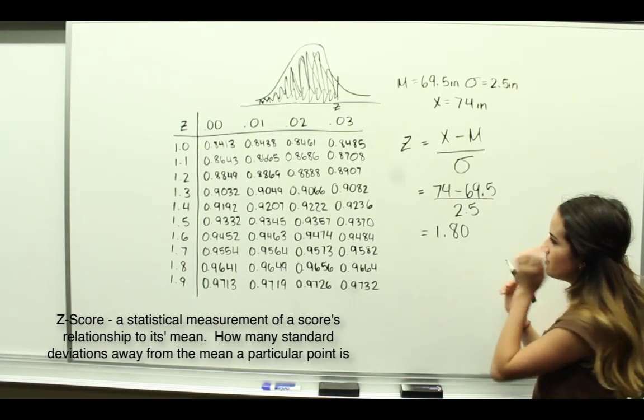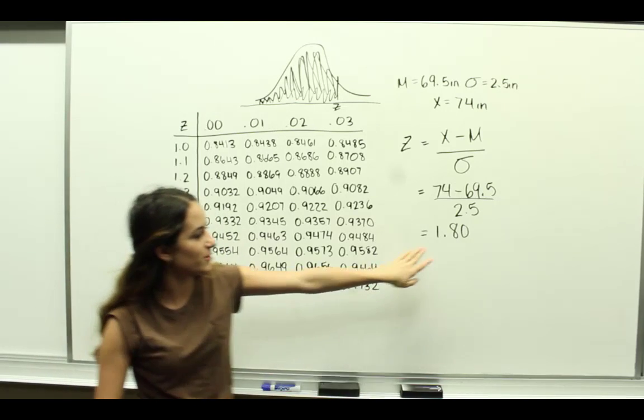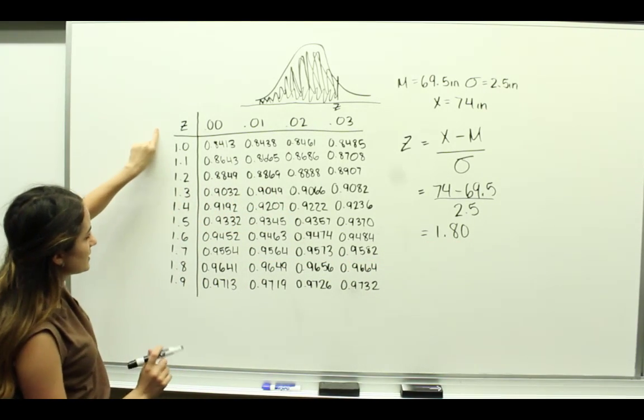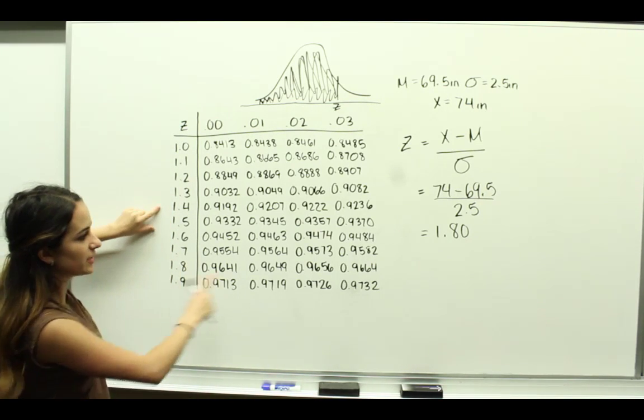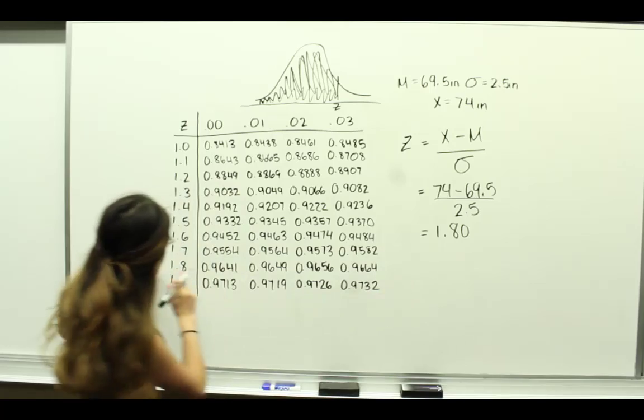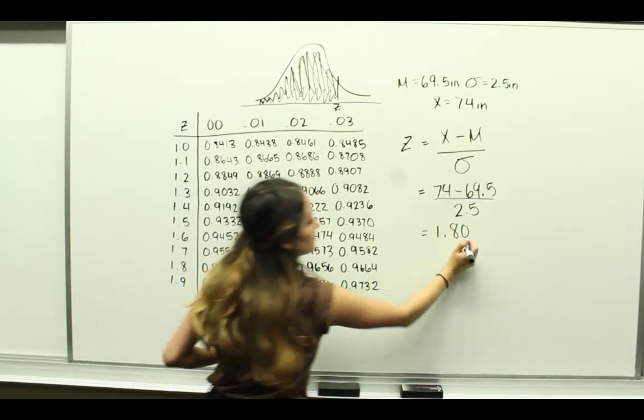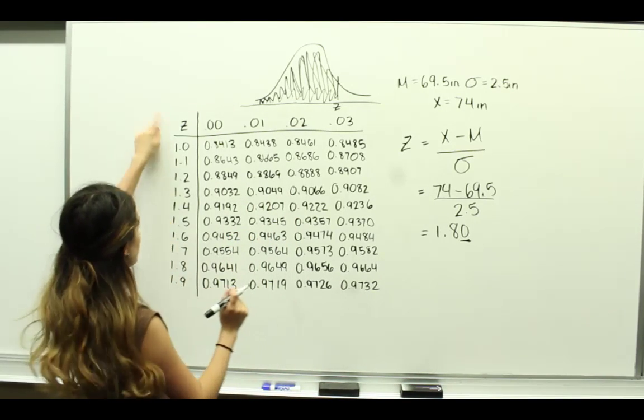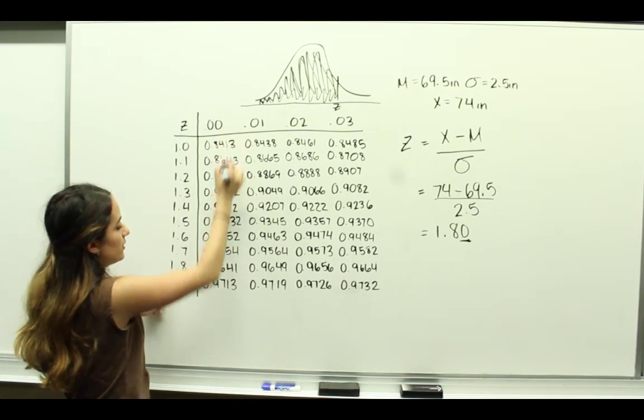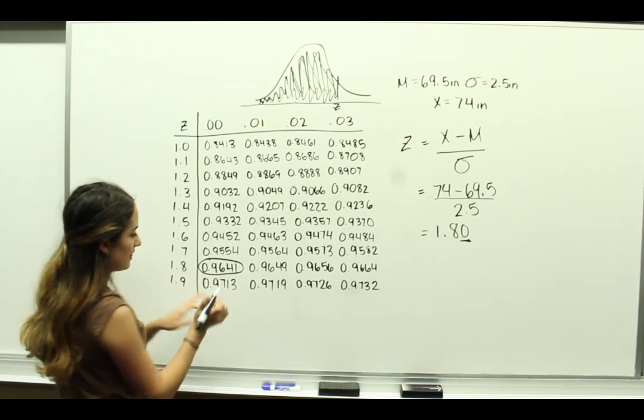We're going to come over to this table and since it's 1.80, you start with the first number and go down the line until you get to 1.8, and then you're going to use this column to do this decimal place. In this case it's 1.80, so you'd go 1.8 and over to 0. So we're going to be using this value.